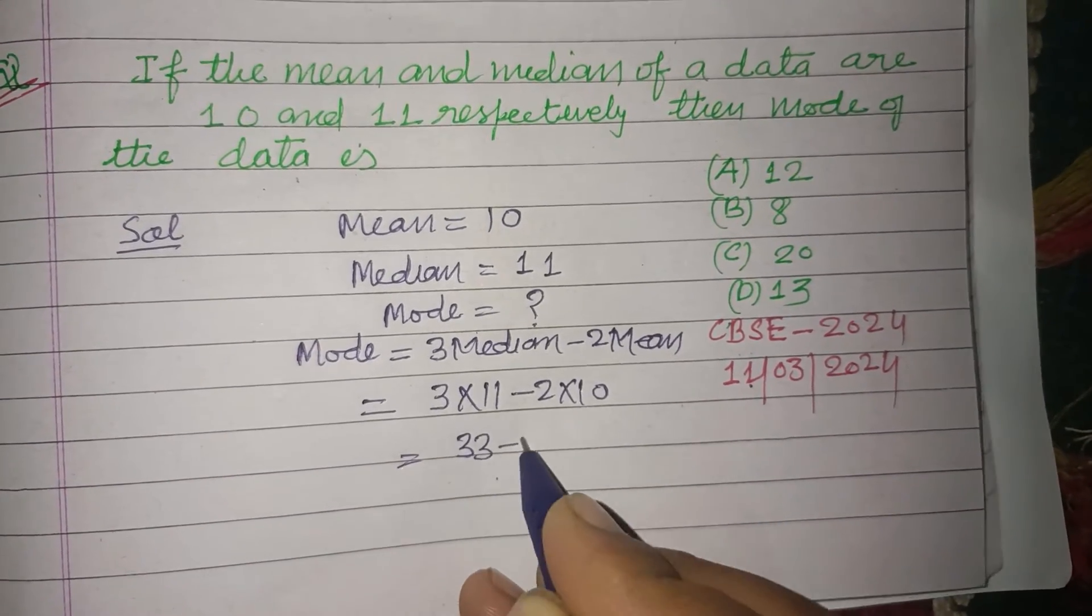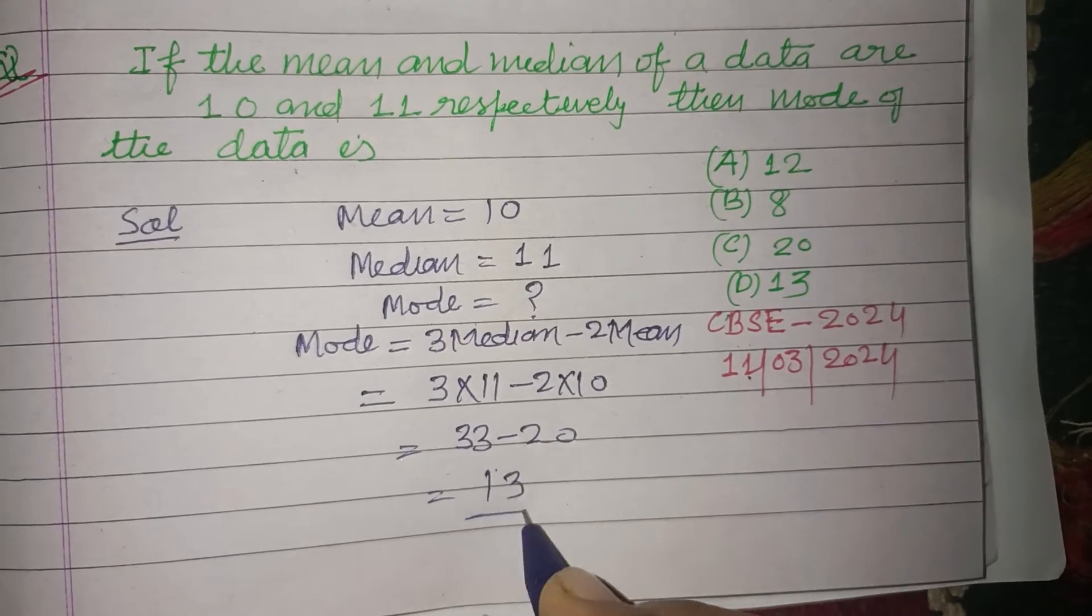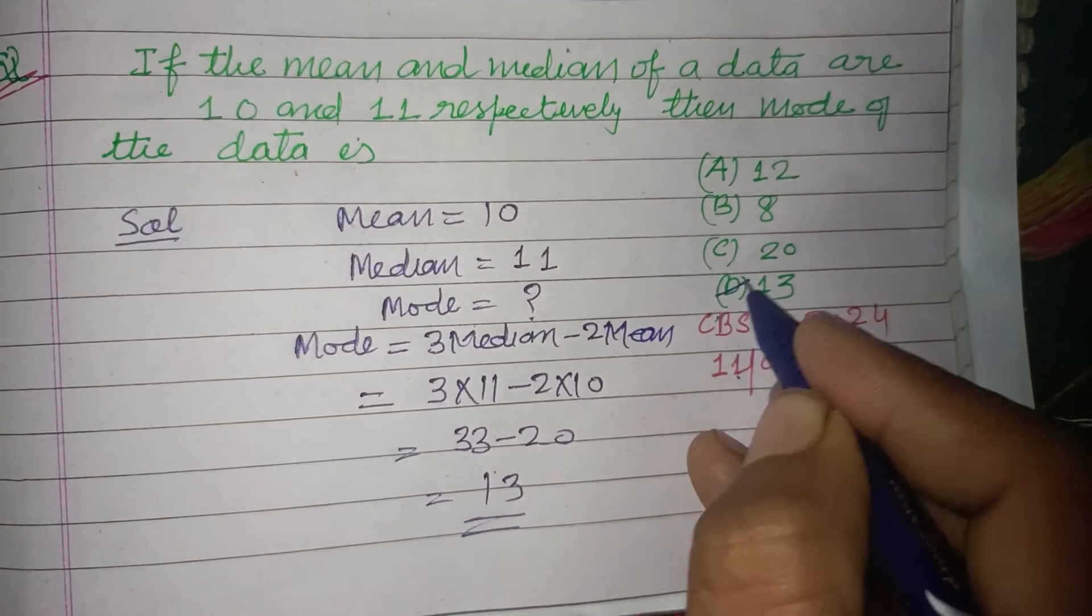This equals 33 minus 20, which is 13. So 13 is the correct answer, found in option D.